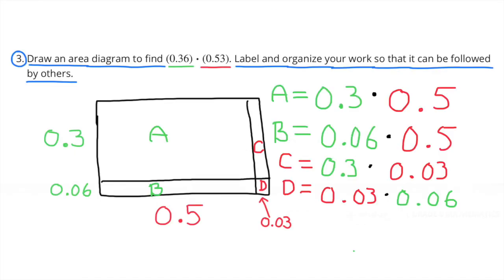Number 3. Draw an area diagram to find 0.36 × 0.53. Label and organize your work so it can be followed by others. Here I drew an area diagram. I have sub-rectangle A with dimensions 0.3 × 0.5, sub-rectangle B with dimensions 0.06 × 0.5, and sub-rectangle C with dimensions 0.3 × 0.03.